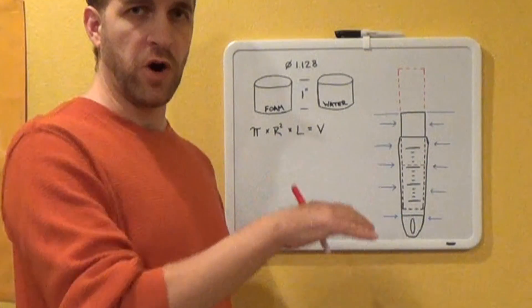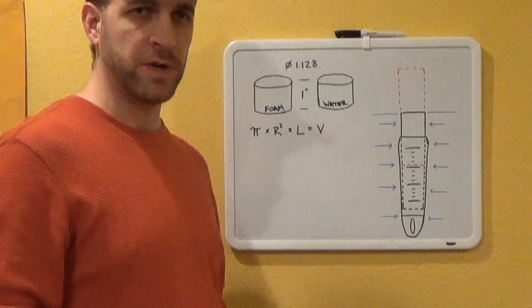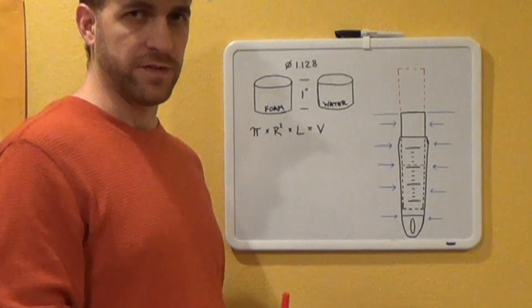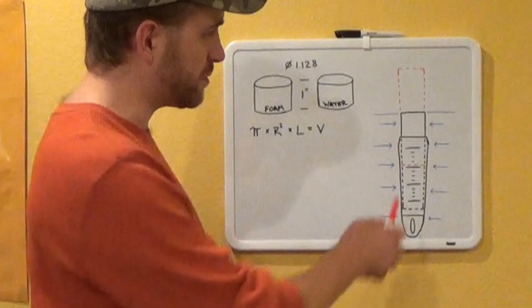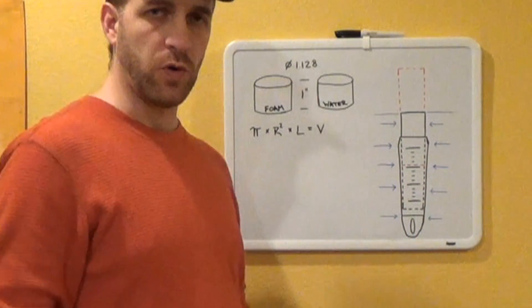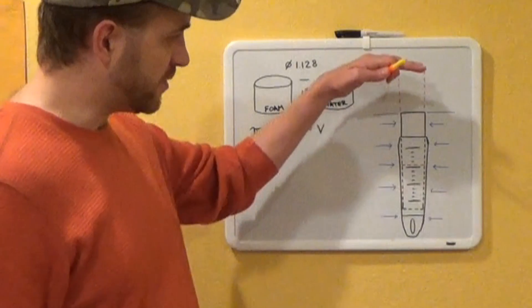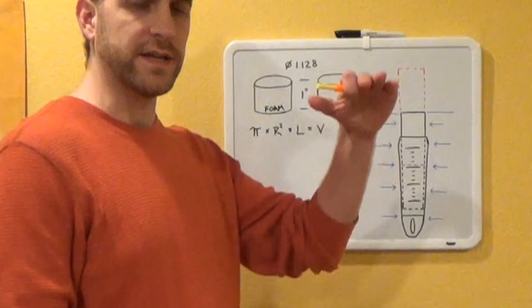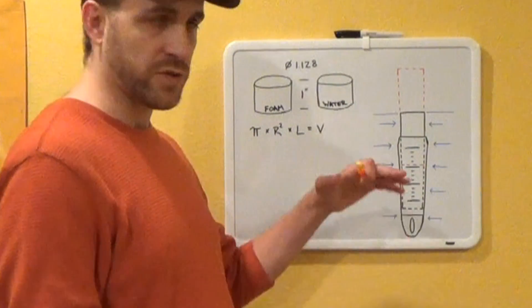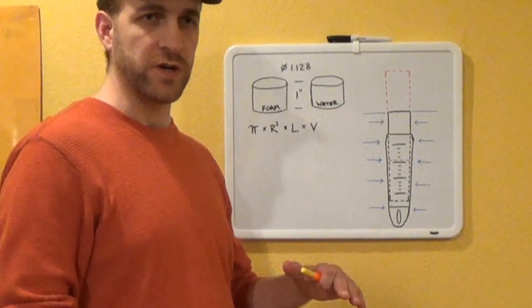Once again, when you pull the foam out, we introduce a brand new volume that is lighter than the weight of the water. So the water is being displaced by that volume. Now the bobber is able to hold up a larger jig. If you twist the foam insert down in, it's going to go down in buoyancy.